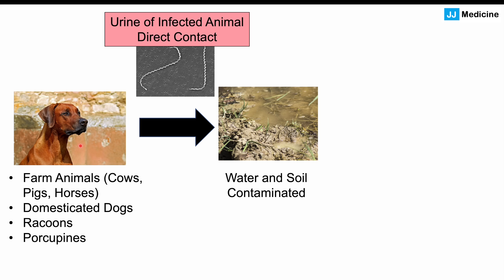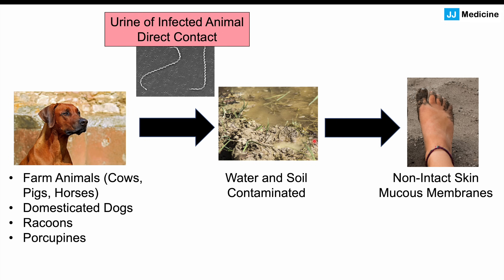Infection most commonly comes from contaminated water, but can also occur from direct exposure to animal urine — which carries a higher risk — or from contaminated soil. The bacteria enter through non-intact skin, so broken skin or cuts that disrupt the epithelial barrier are required. They can also enter through mucous membranes — the nose, eyes, and mouth. Once inside, the bacteria travel through lymphatics into the bloodstream, with a predilection for the liver, kidneys, and even the central nervous system.